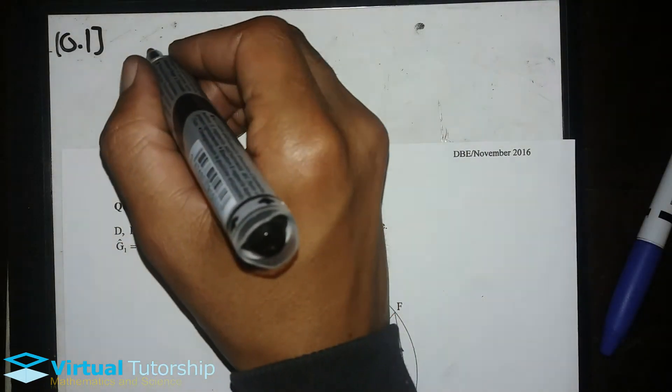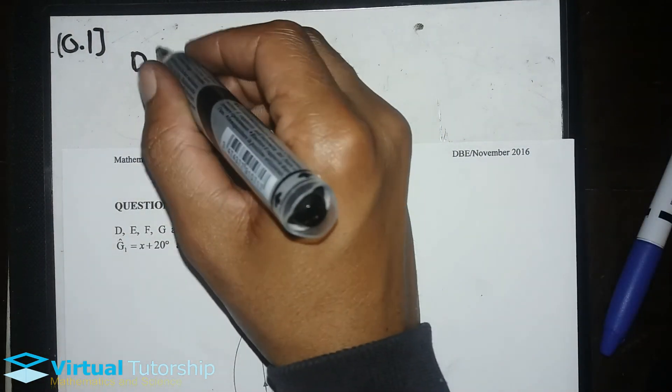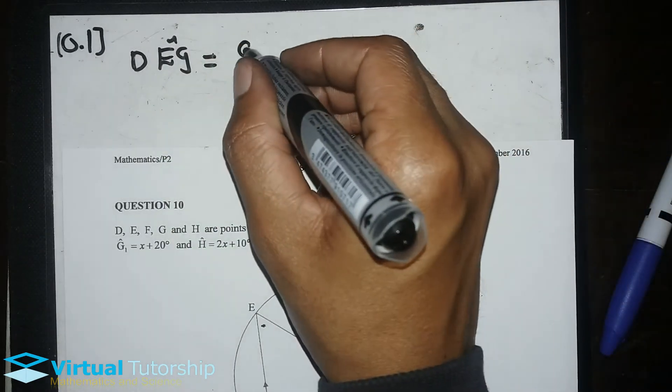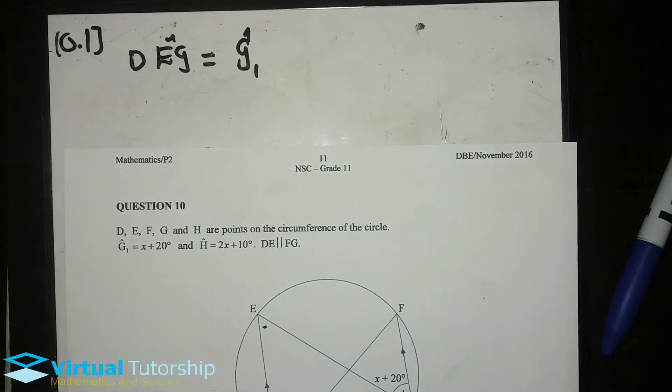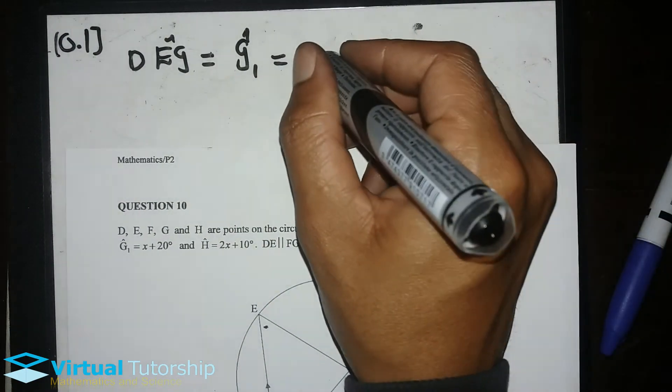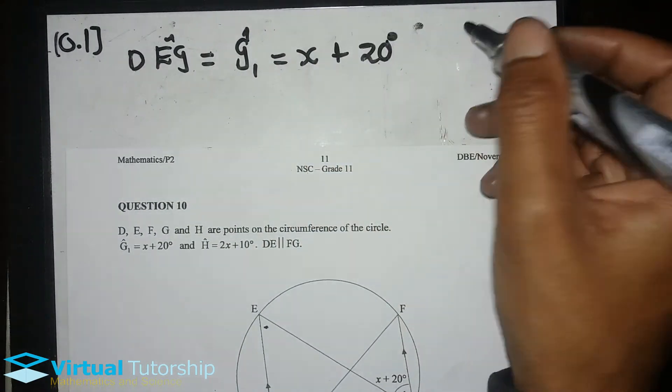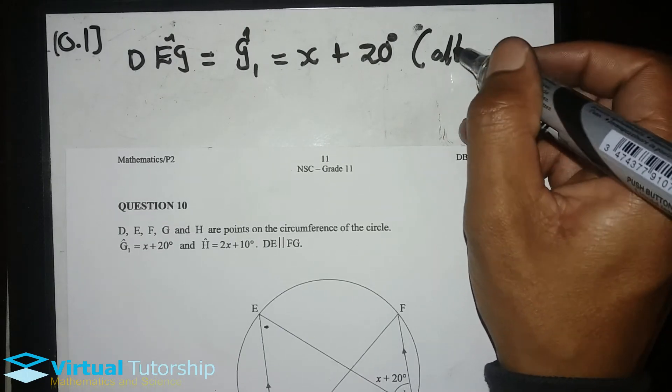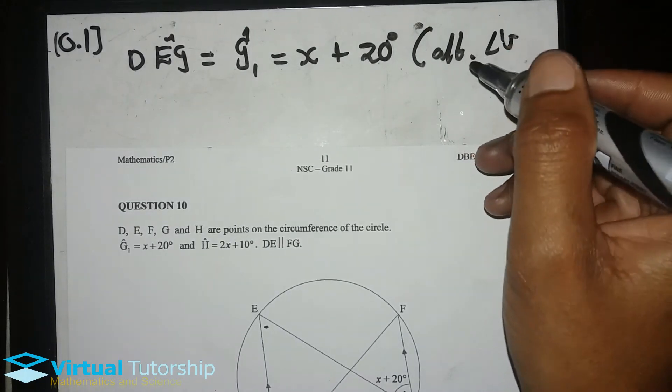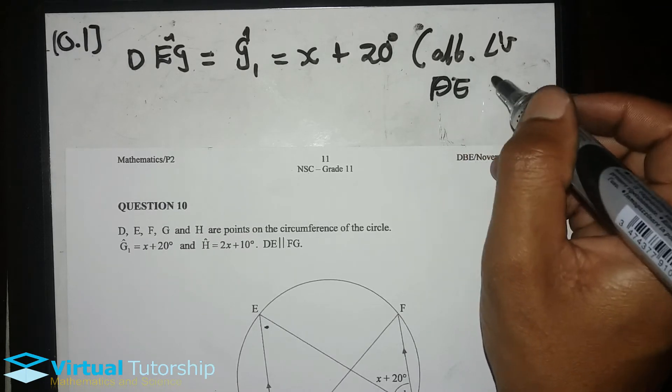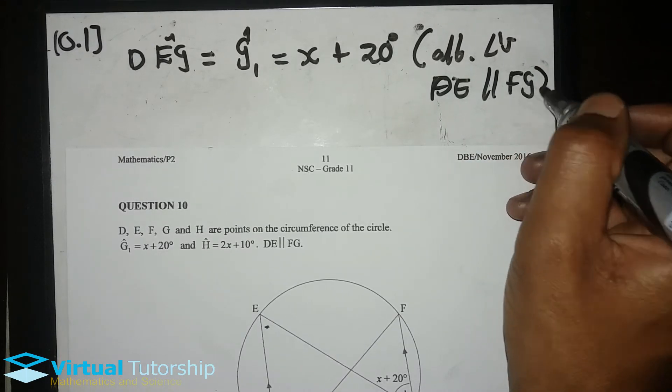Angle DEG is equal to angle G1, which is, in terms of X, expressed as X plus 20 degrees. Reason: Alternating Angles, where DE is parallel to FG.